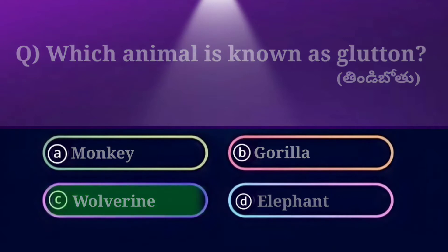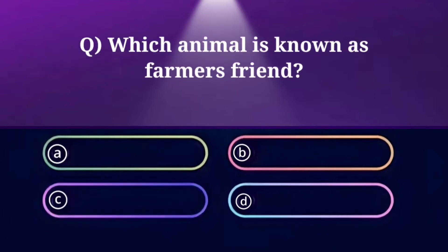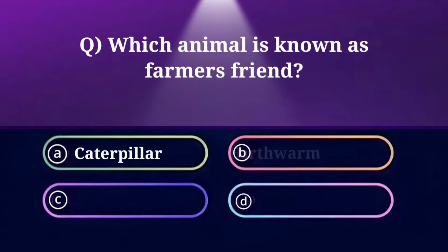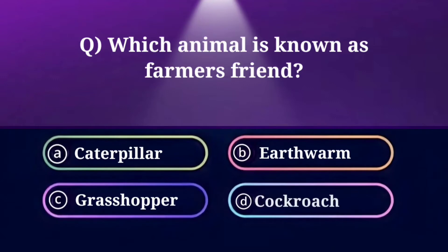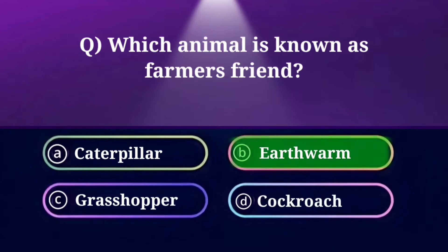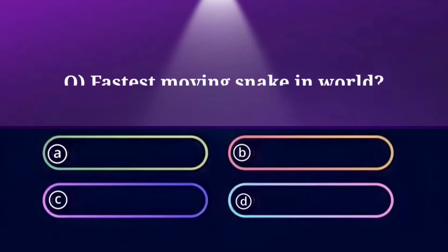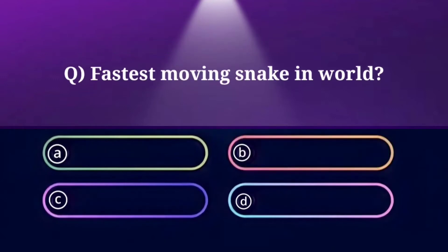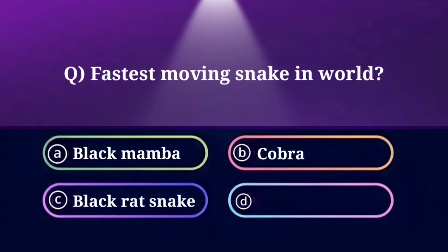Which animal is known as 'farmer's friend'? Option A: Caterpillar, B: Earthworm, C: Grasshopper, D: Cockroach. And the answer is Earthworm.